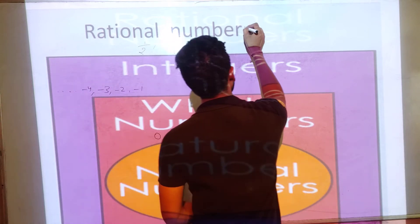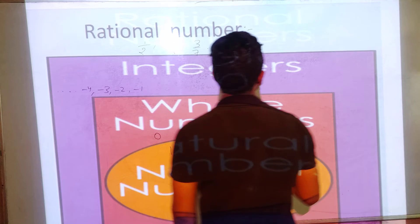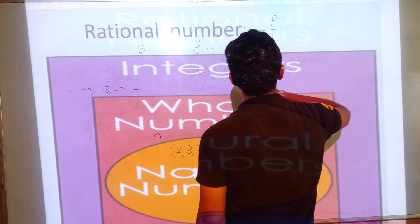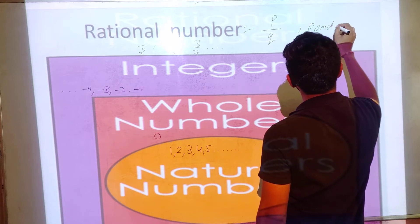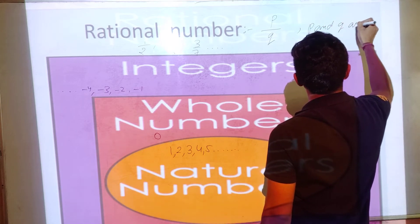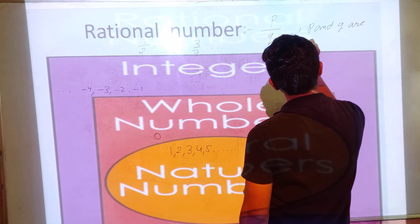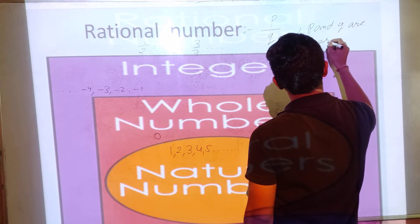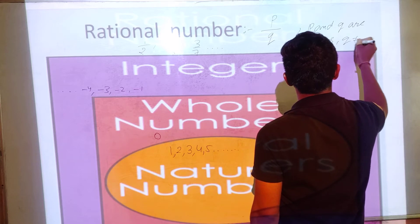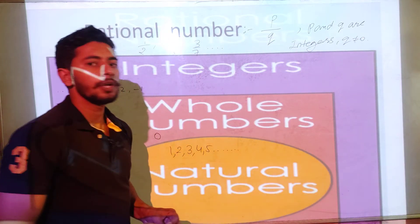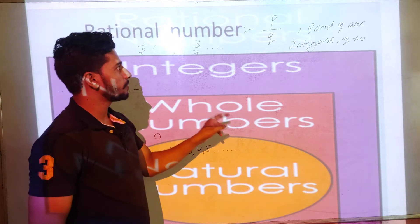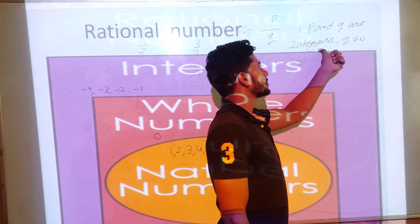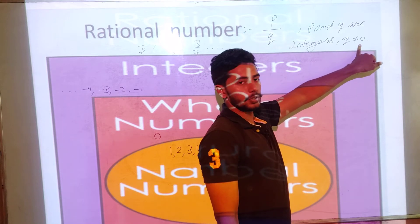The definition of a rational number is: if a number can be written in the form p over q, where p and q are integers and q is not equal to 0, then it is called a rational number. All numbers that can be written in the form p/q where p and q are integers and q ≠ 0 are rational numbers.